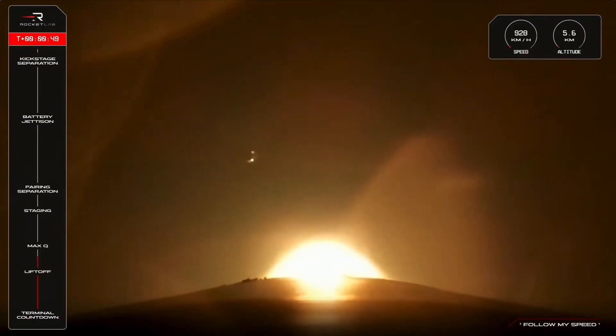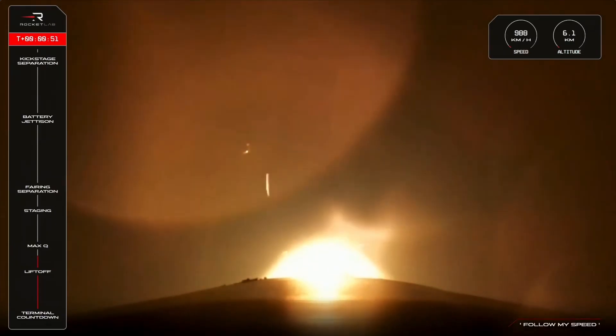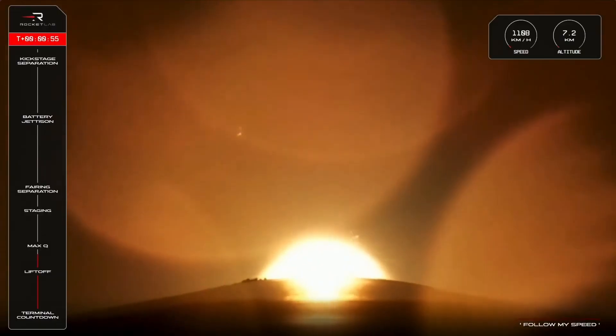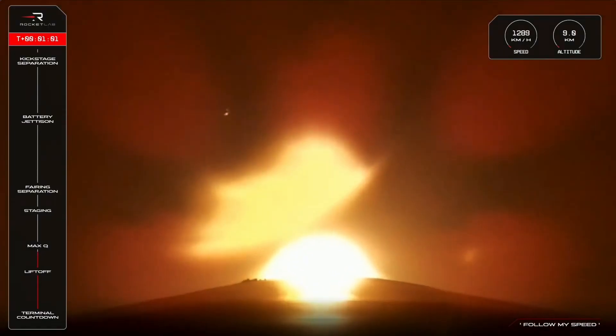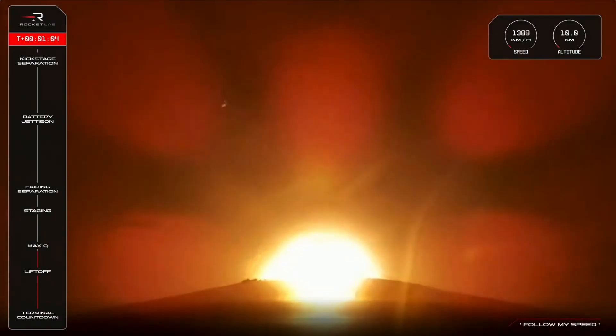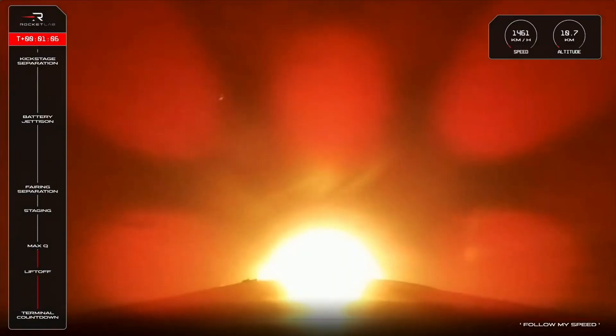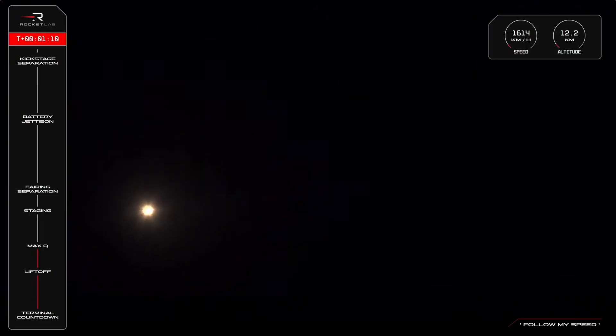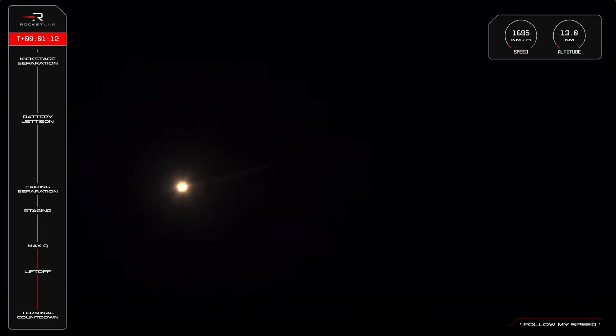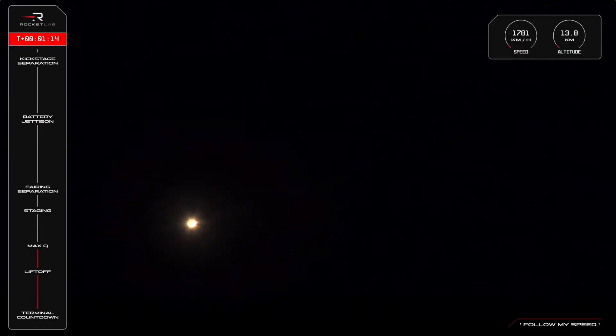And we are just above 5.5 kilometers in altitude and quickly climbing past 1,000 kilometers an hour. So that means soon our Stage 1 engines will throttle down just a touch for Max Q or Maximum Aerodynamic Pressure. Approaching Max Q. Cleared Max Q.